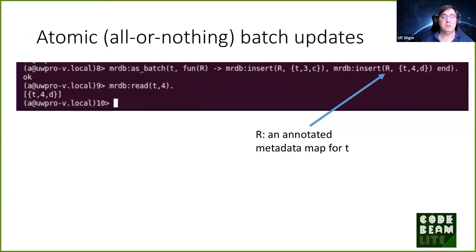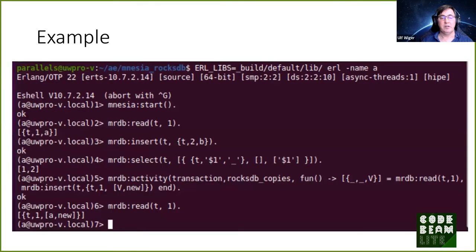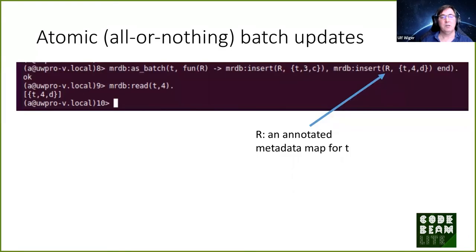Batches can be used similarly and can also be used in the activity function. You provide a batch and a function — the function works not in a transaction context, but will be written atomically as a whole to the database. In the 'ask batch' function, you provide a table name and the function takes a reference — a map with metadata for the table, annotated with a batch reference — and MRDB functions will sense this and use the appropriate RocksDB functions.